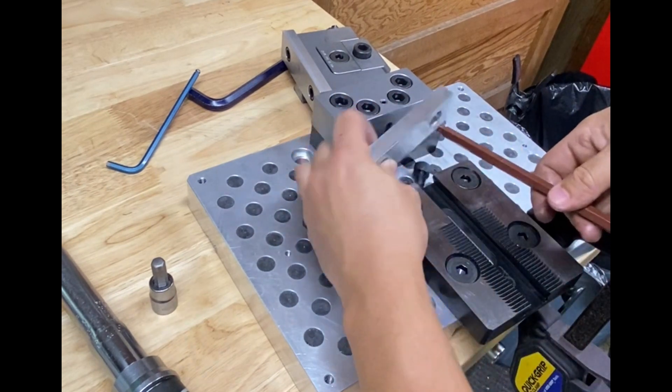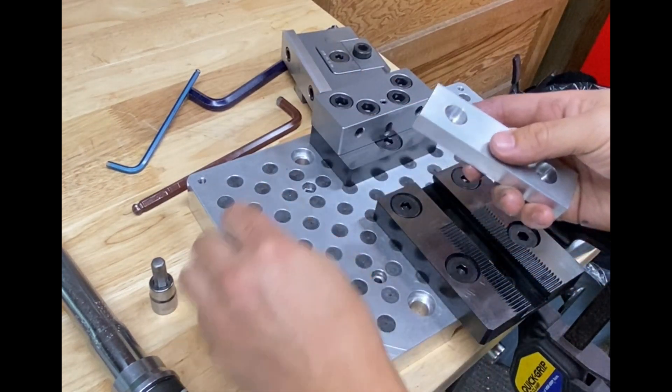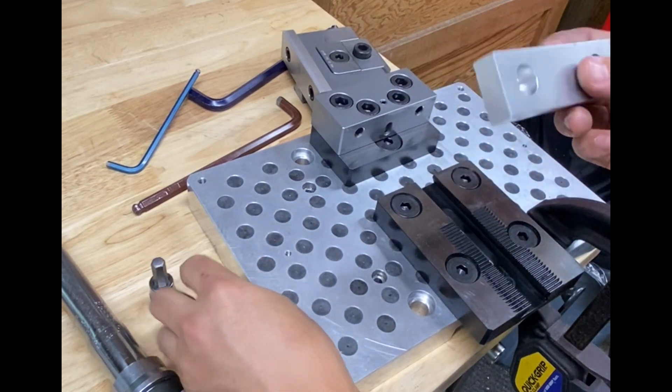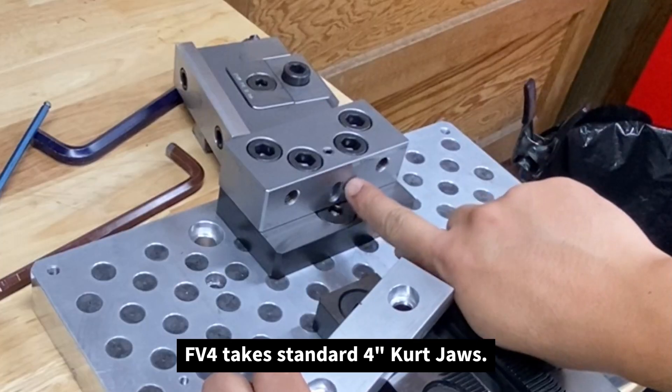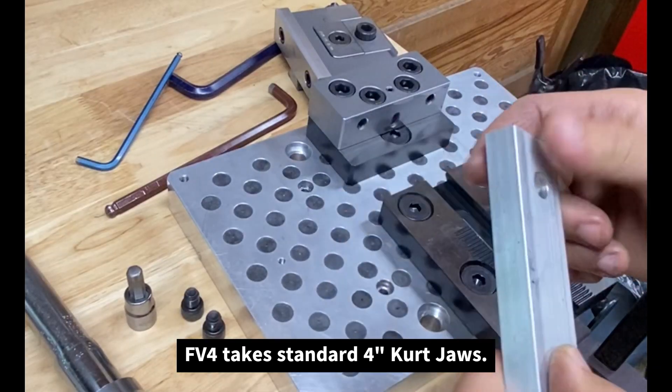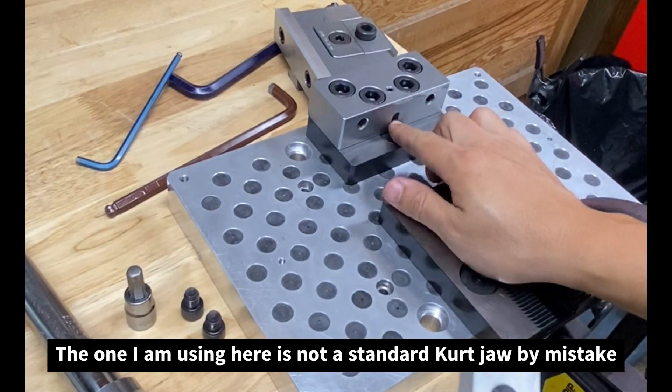Another feature that I want to show so there's no confusion. A common question I get is, do these work with standard four inch crit jaws? And yes they do. Standard four inch crit jaws, if you look closely over there, there's a slide.